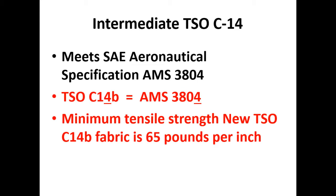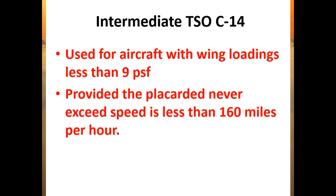Knowing what we know about Grade A, what do you think the minimum tensile strength is going to be for intermediate fabric if the minimum tensile strength for new is 65 pounds per inch? Intermediate fabric is required on aircraft with wing loading less than 9 pounds per square foot, given that the never-exceed speed is less than 160 miles per hour.